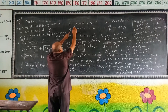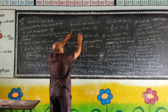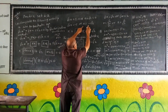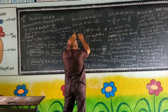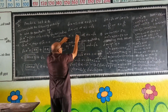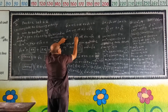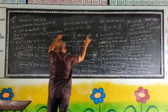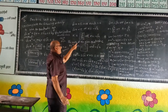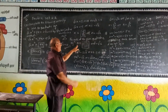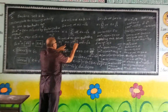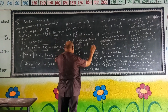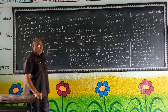Therefore root 2 x plus 5 into x plus root 2 equals 0. From the first factor, root 2 x equals minus 5, so x equals minus 5 divided by root 2. From the second factor, x equals minus root 2. The roots of the given equation are minus 5 over root 2 and minus root 2.